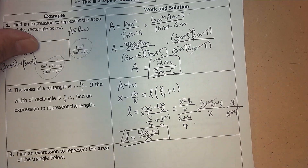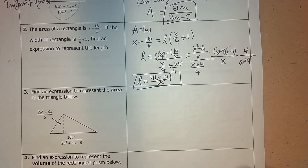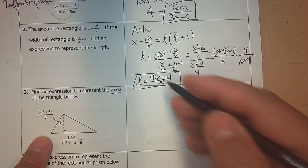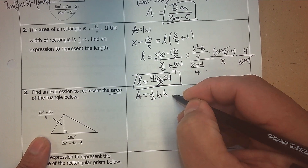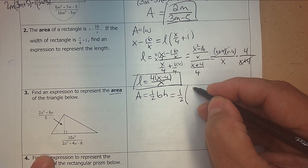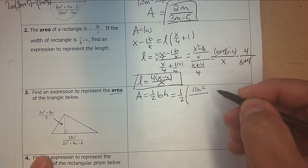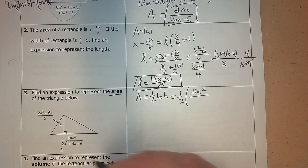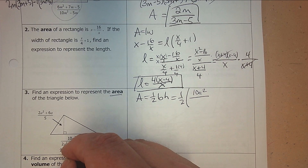Number 3: find an expression to represent the area of the triangle. The geometric formula is half the base times the height. The base is 10a squared. I can see that 2 goes into all evenly, so I'm going to factor out the 2.